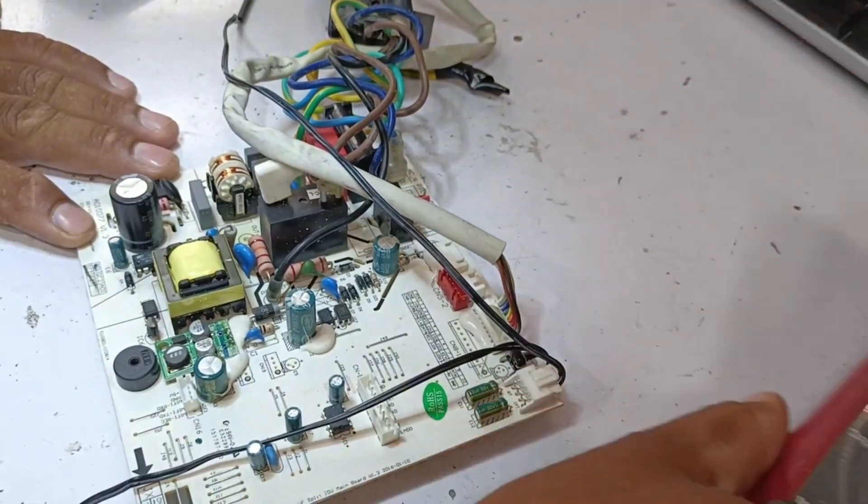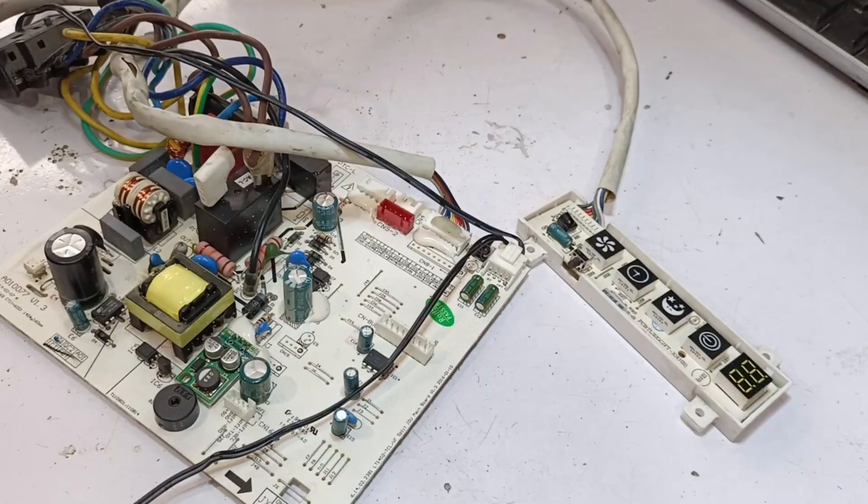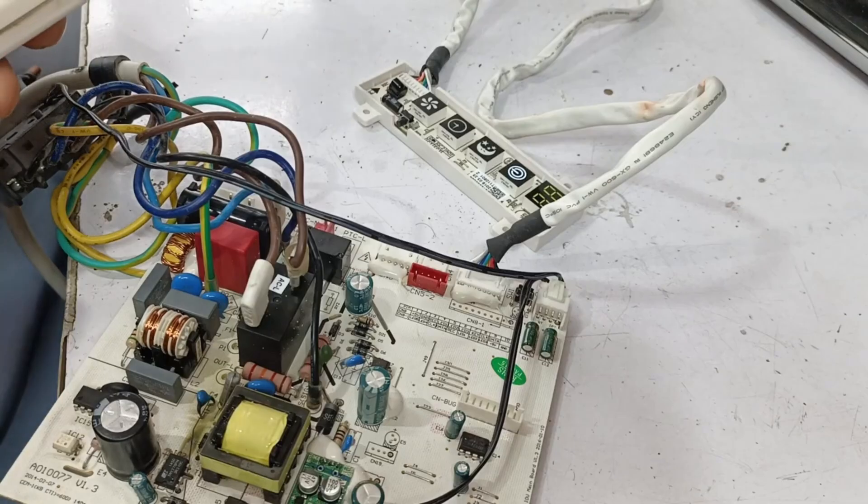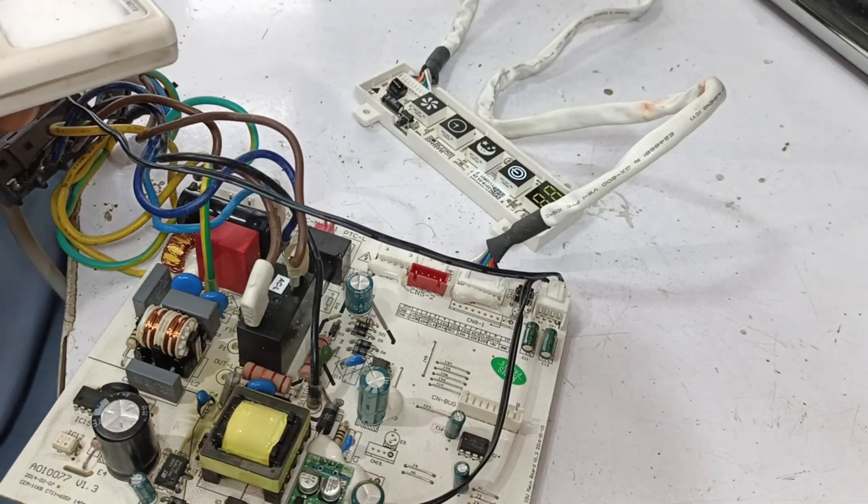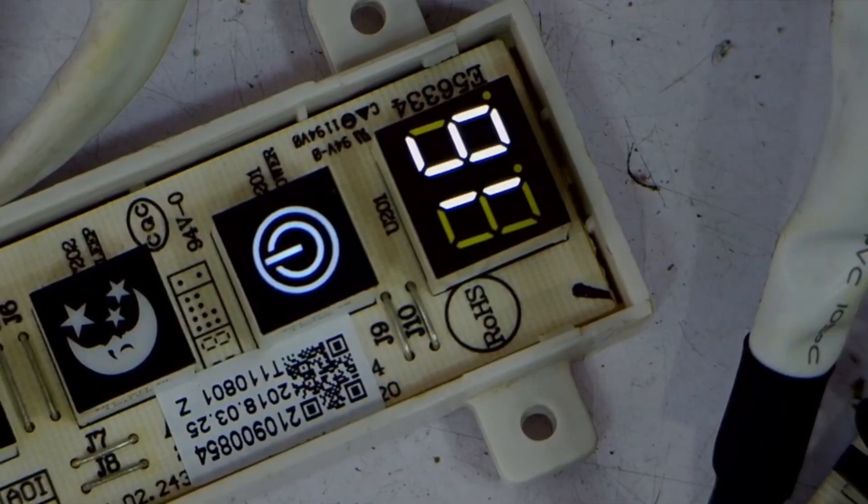So, what we'll do now is apply power to the PCB and check if the display turns on. I'll now turn on the power, and the display is turned on. Now, let's check the remote because the customer complained that the remote wasn't working properly. I turned it on and tested it from a distance, and I don't see any fault. It's working perfectly fine.